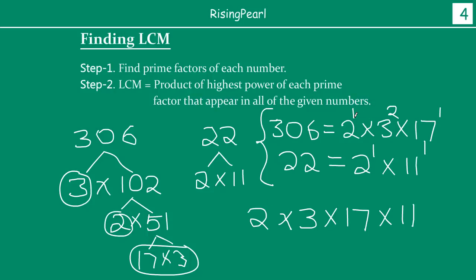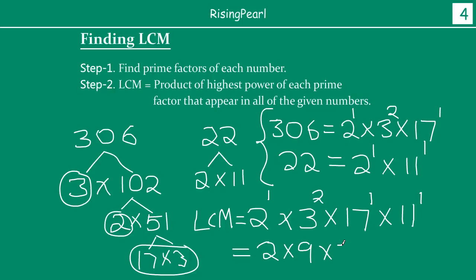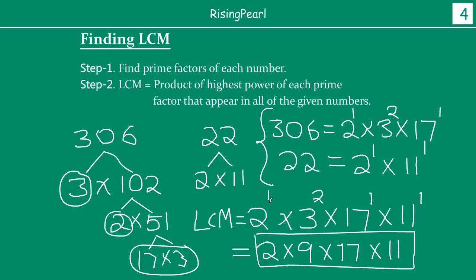Now we look for the highest power of each. For prime factor 2, the maximum power is 1. For 3, the highest power is 2. For 17, the power is 1. For 11, the power is 1. So the LCM of 306 and 22 equals 2¹ × 3² × 17¹ × 11¹. If you multiply that out, whatever you get will be the LCM for these two numbers.